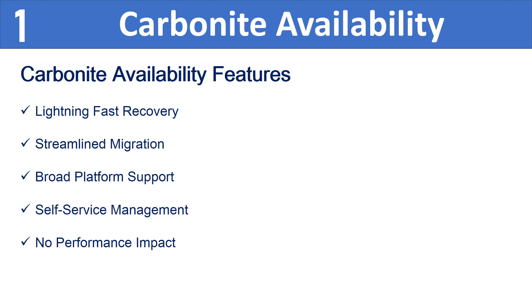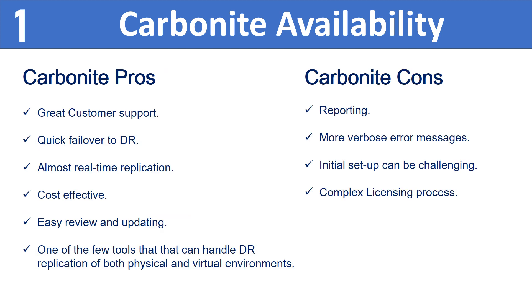Features of Carbonite Availability include: fast recovery — failover to your secondary site with minimal downtime with seconds-long recovery points; streamlined migration — migrate from any hypervisor or cloud to any other easily and with minimal downtime; broad platform support — replicate physical, virtual, and cloud-based systems to any environment locally or with cloud service provider partners; self-service management — end user control over configuration, monitoring, and failover through a self-service portal; and no performance impact — protect all your workloads with continuous replication without impacting system performance.